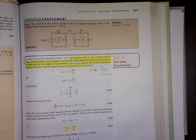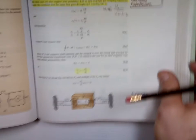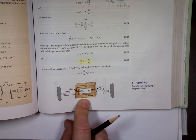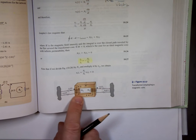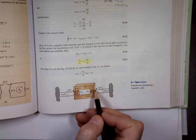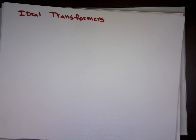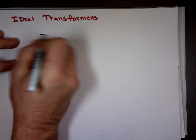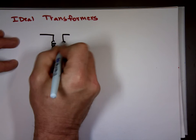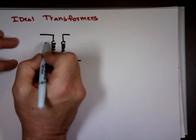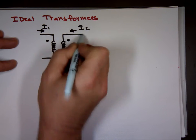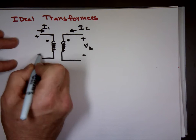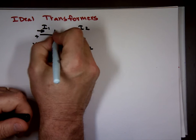A transformer has two coils: n1 is the number of turns on one side and n2 on the other, with currents and voltages v1 and v2. When we draw an ideal transformer, we use dots to indicate polarity — I₁ going in this direction and I₂ going the other way, with the ratio n1 to n2.